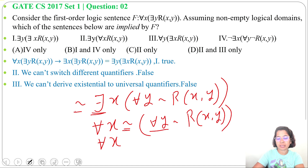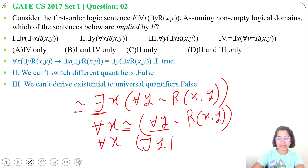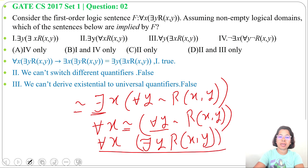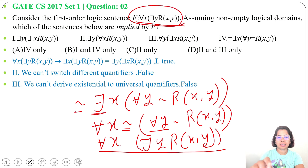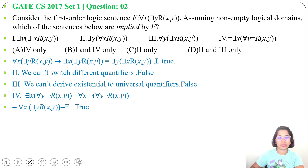...the universal quantifier for all Y changes to existential, giving: for all X, there exist Y, negation of negation of R of X, Y. Negation of negation simply gives R of X, Y. So the result is: for all X, there exist Y, R of X, Y — which is the same as F. So both are equivalent. Statement 4 is true.